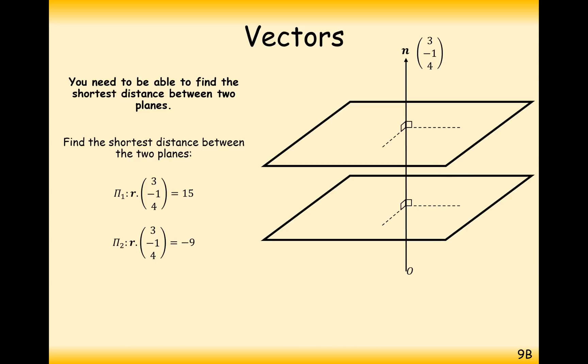They're going to be on opposite sides of the origin when we have a negative number, such as we do in this problem here. When the d value at the back is negative, what happens?